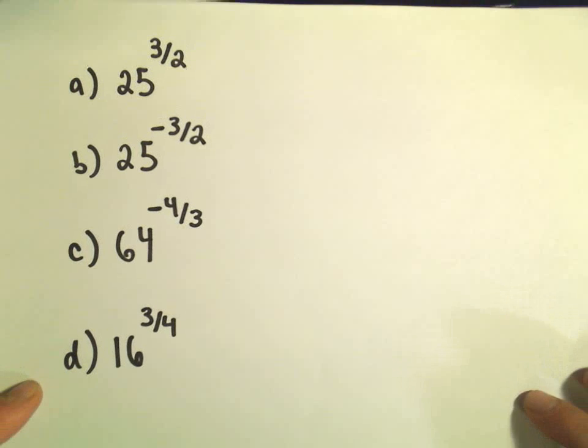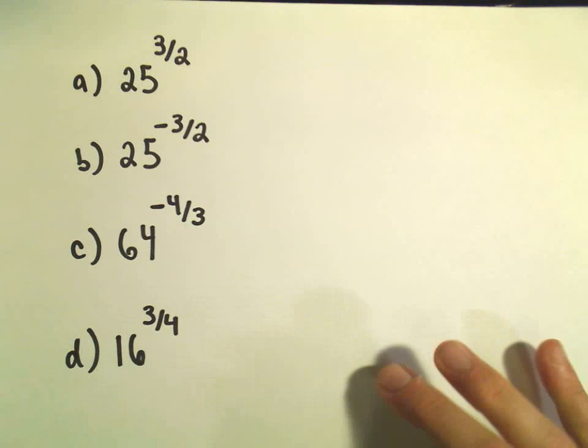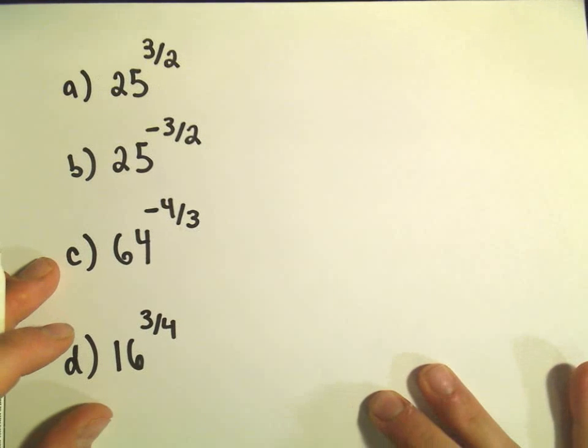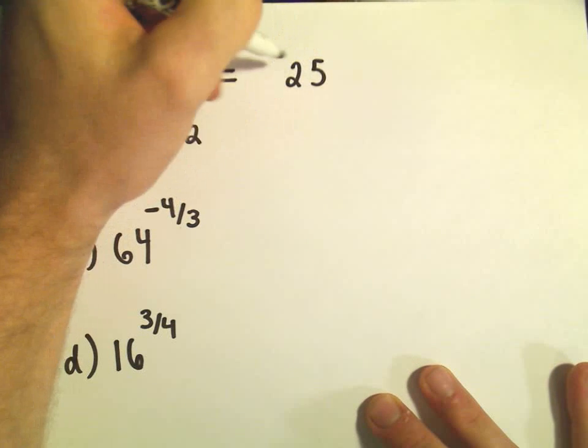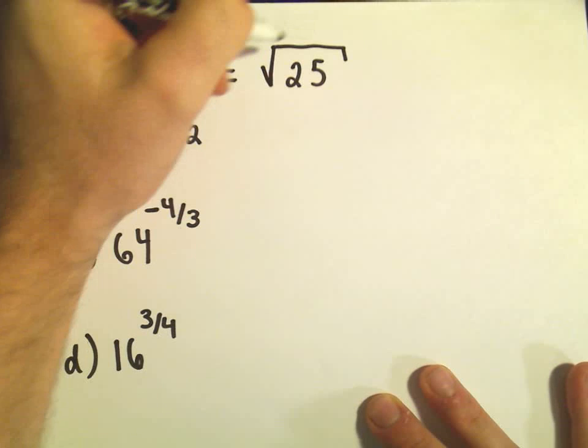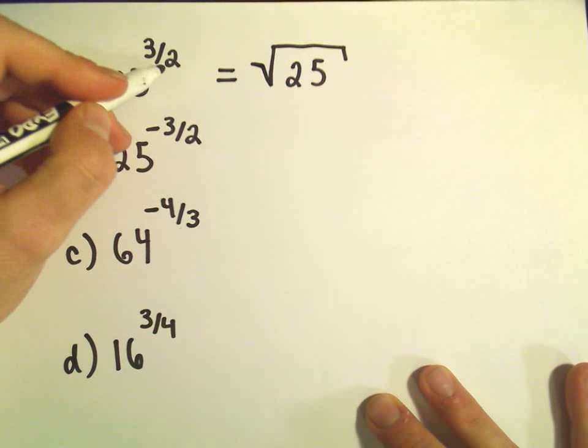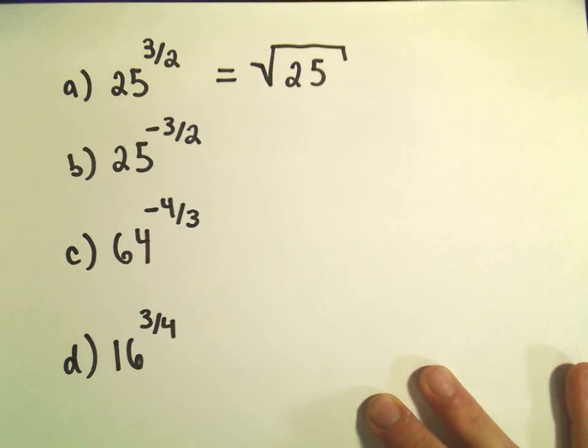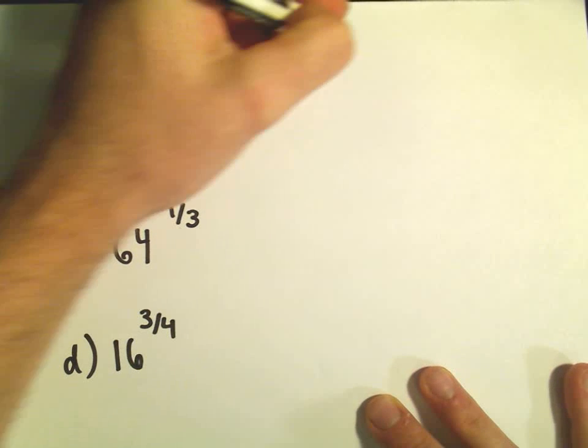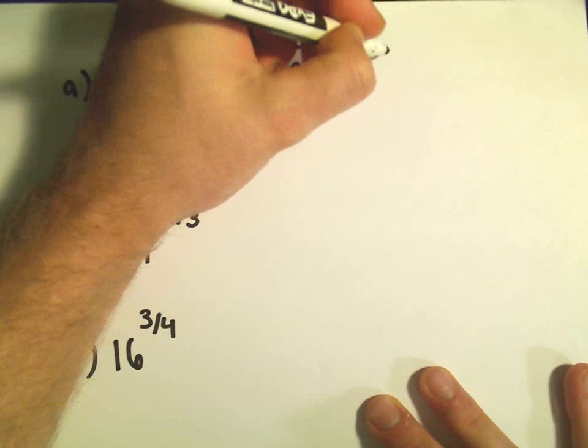So 25 to the 3 halves, let's do that one first. So what I would do is simply rewrite this. The denominator becomes the root, so this is a square root. We don't always write it, but let's just emphasize it here. This is a square root cubed.